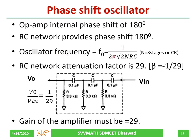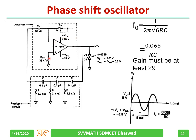The oscillator frequency is given by 1/(2π√(2N)·RC). With three stages (N=3), it becomes 1/(2π√6·RC). The RC network attenuation factor is 1/29. Because the attenuation factor is 1/29, the amplifier gain must be at least 29 for A·β to equal 1 and for 360° oscillations to start. F₀ is also expressed as 0.065/(RC). Gain must be at least 29. Output amplitude is kept under a certain value using Zener diodes.